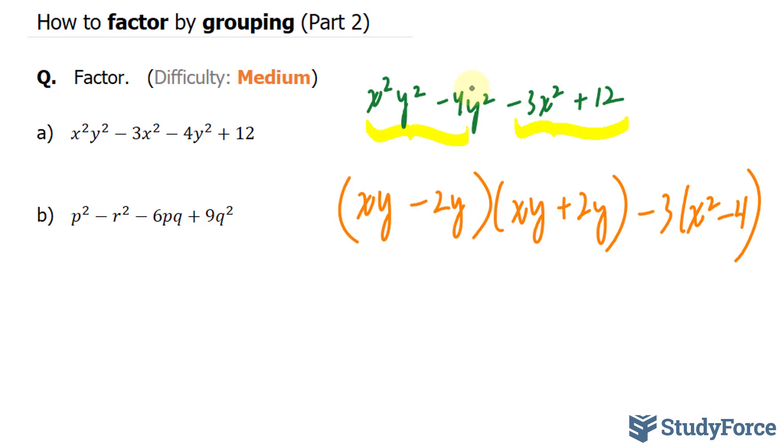Starting off with this expression, instead of taking this as a difference of squares, I common factored. I pulled out y to the power of 2 from both of these terms, leaving me with y squared times x squared minus 4.